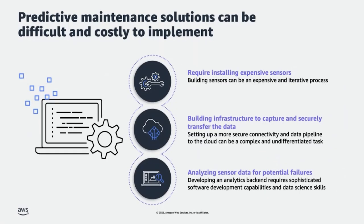To build a predictive maintenance solution, there are three aspects to think about. First, you need to build or buy a sensor that can collect relevant data from the asset. Typically, these sensors are expensive and building them is an iterative process that requires time and money. Second, you require the infrastructure to capture the data from the sensor and move it to the cloud for processing, which requires building secure connectivity and a data pipeline — complex and undifferentiated work. Third, analyzing the data once it's been sent to the cloud requires building advanced analytics, which require not only software development skills but also data science skills.